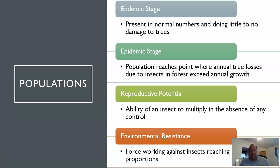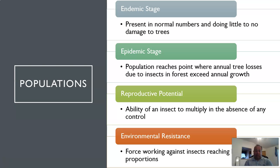We want environmental resistance to these populations — that's the force working against insects reaching huge proportions. We want to give the ecosystem some resiliency, some way to fight off the insects and keep them in the endemic stage rather than the epidemic stage. We're never going to get rid of insects, nor would we want to, because they're part of the ecosystem. It's only a problem if it gets to the epidemic stage, like it has for bark beetles.